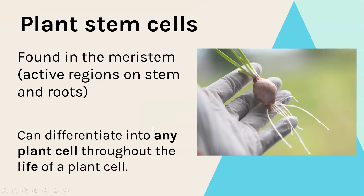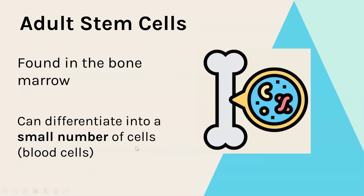Plants have stem cells and these are found in the meristems, which is what we call the actively growing parts of a plant. For example, the tips of the roots and the growing regions in the stem. They can differentiate into any plant cell throughout their entire life.